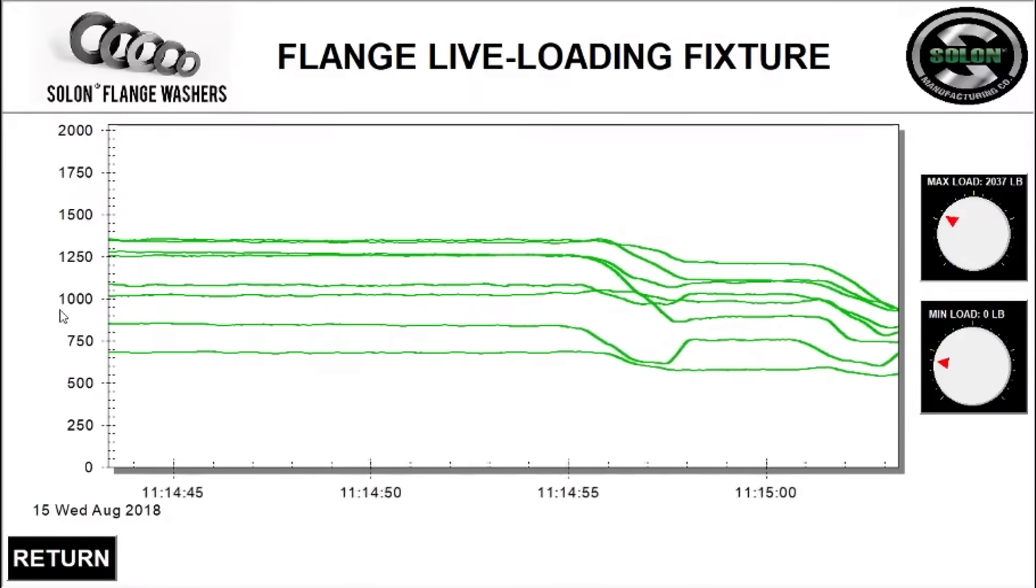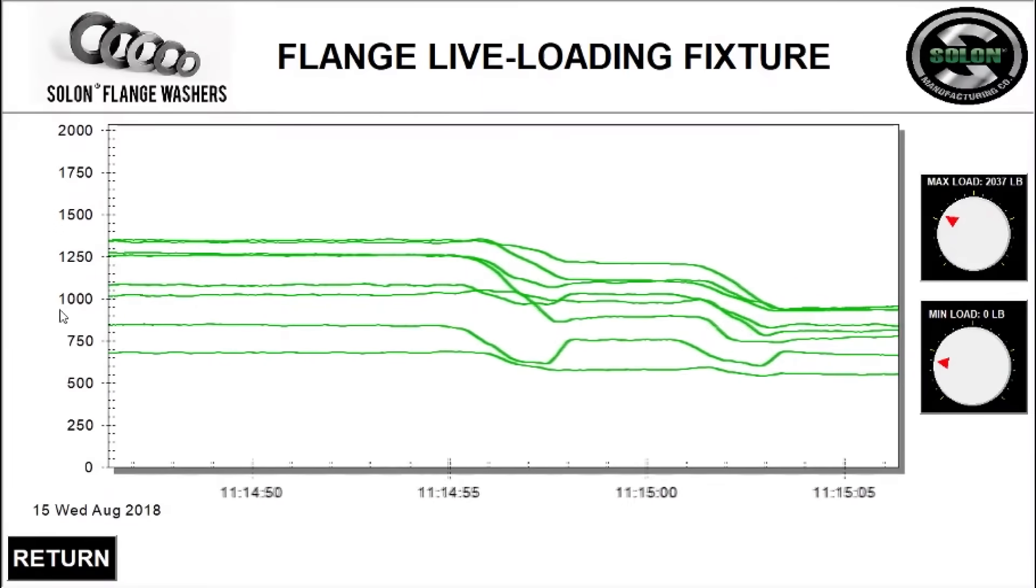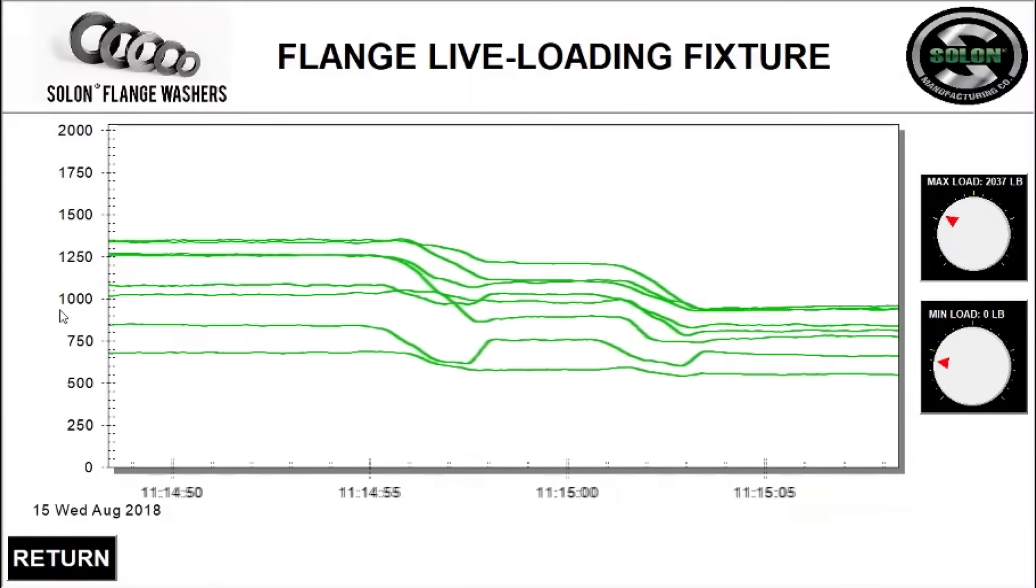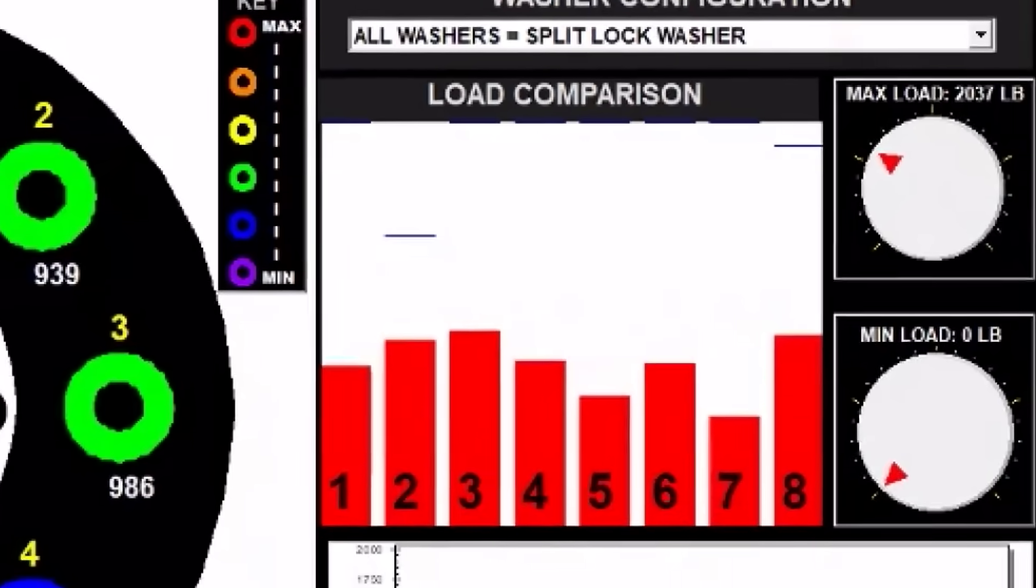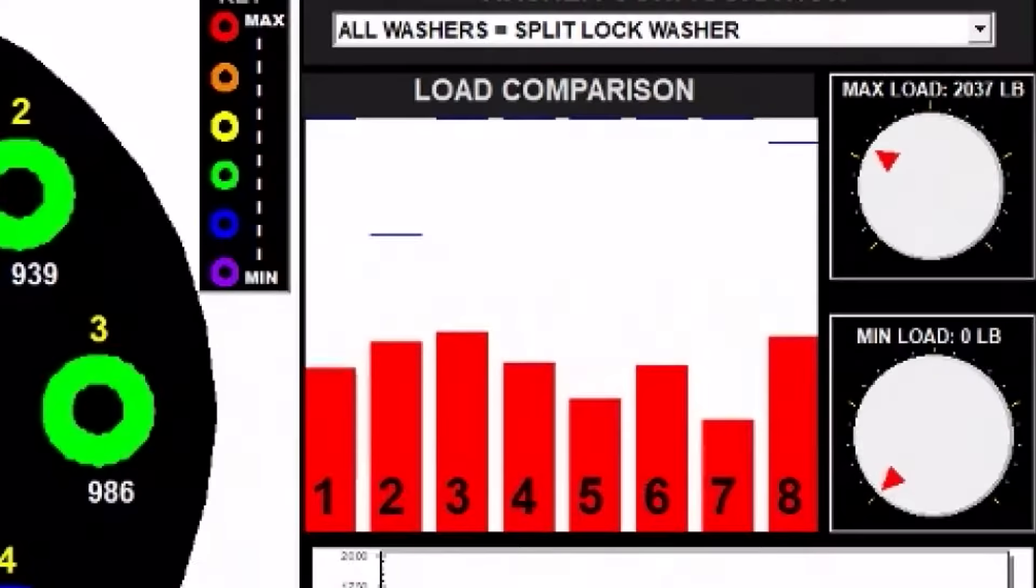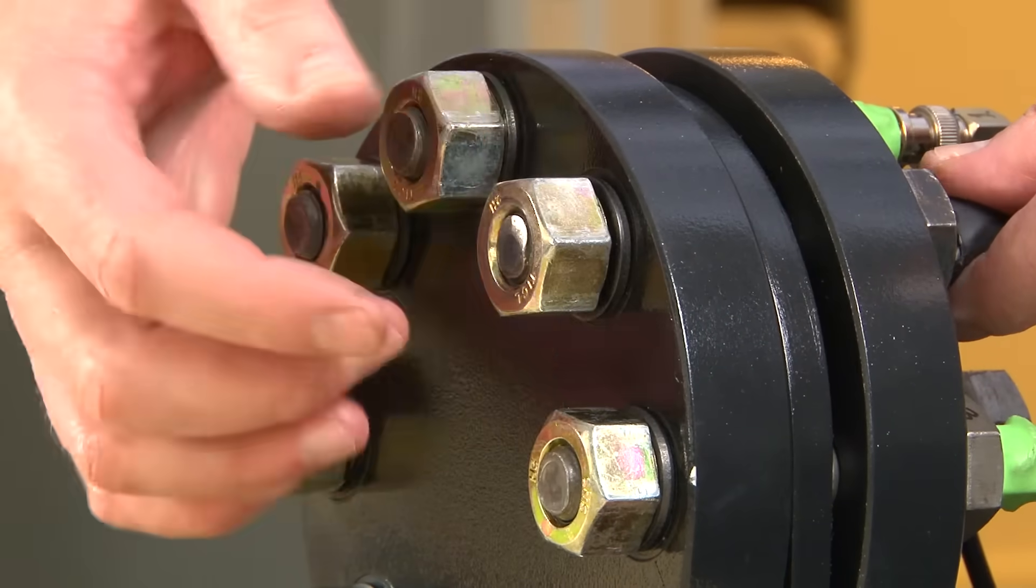It is possible to monitor bolt load using a strip chart after the flange experiences two yielding events. Freezing the video reveals that the average bolt load has dropped nearly 30%.